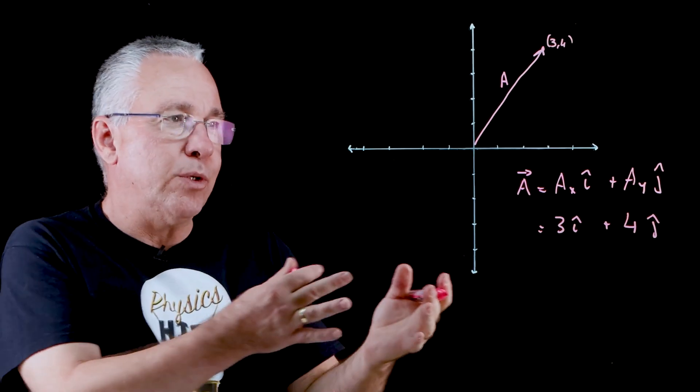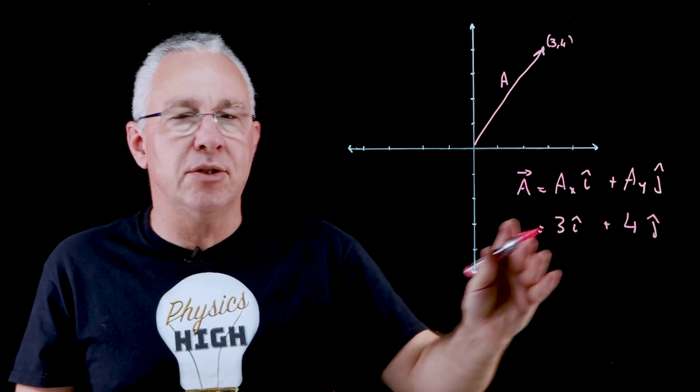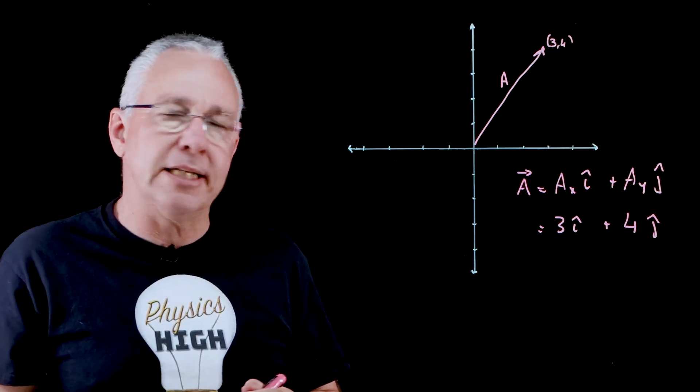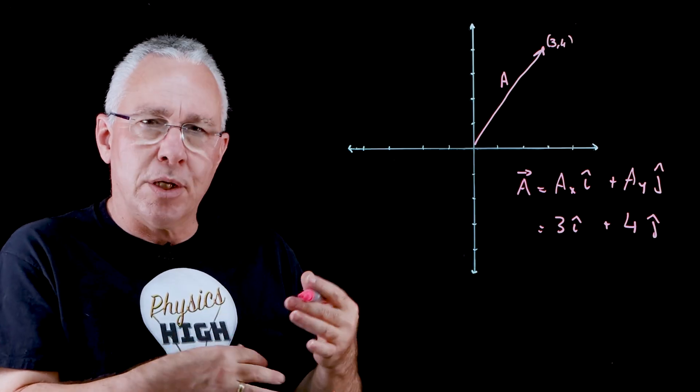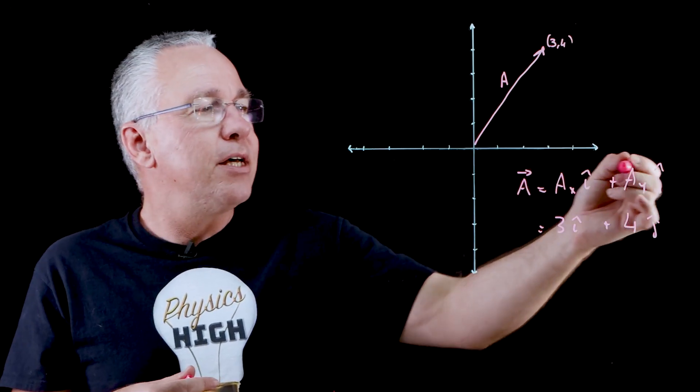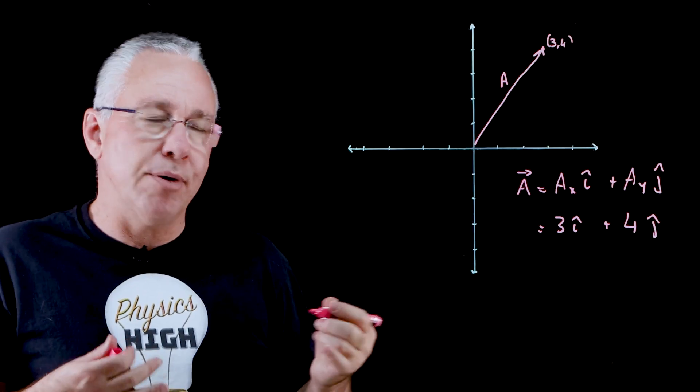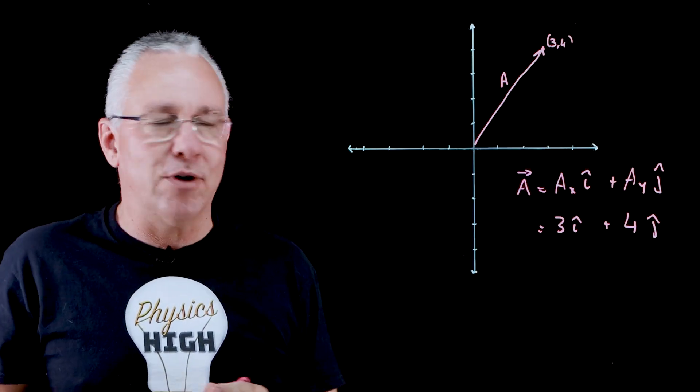So that is the way we would draw that vector in terms of the unit vectors, in this case in two dimensions. Equally, if I have a vector also in three dimensions, then I have some az component with the k hat right next to it.